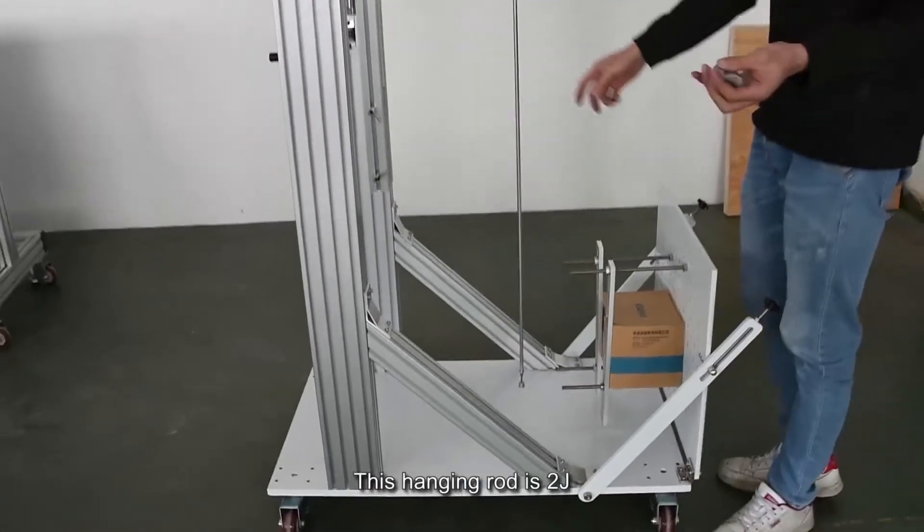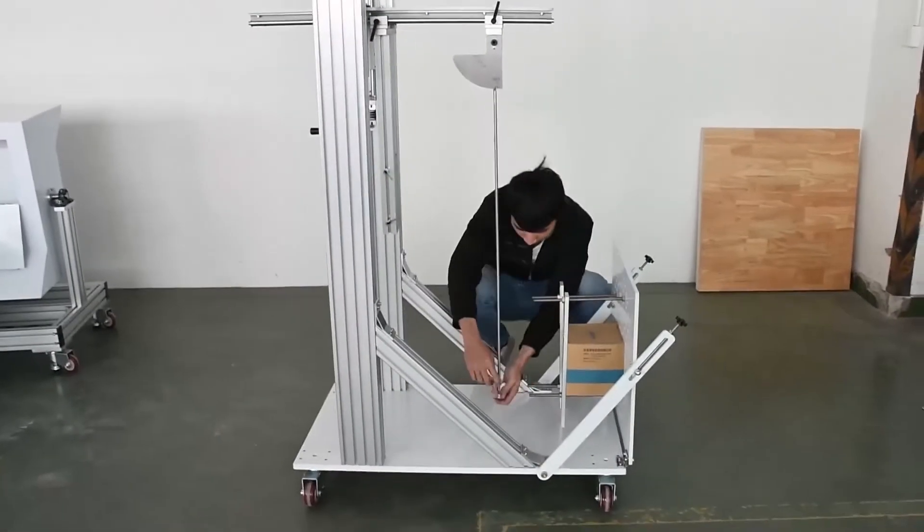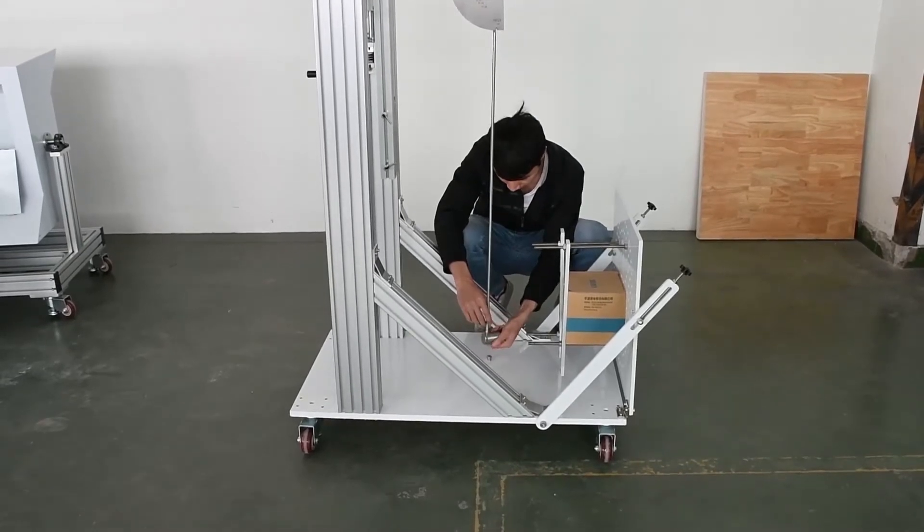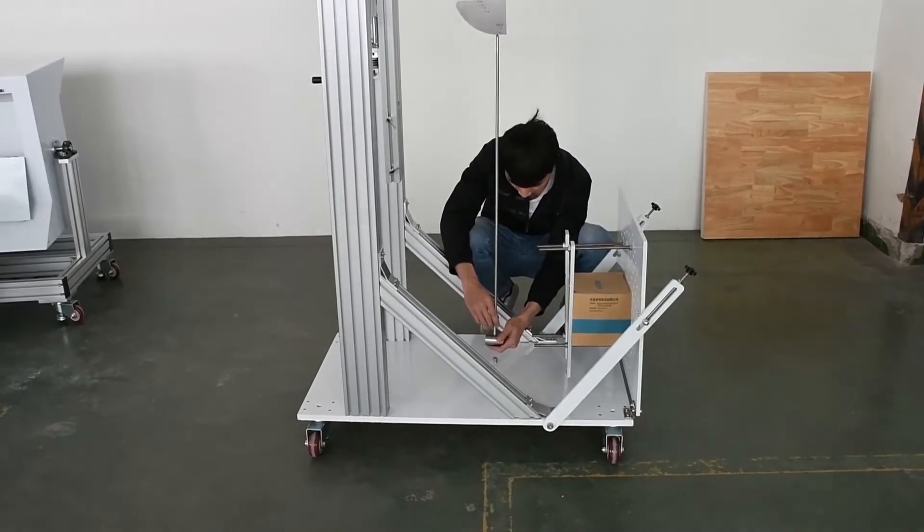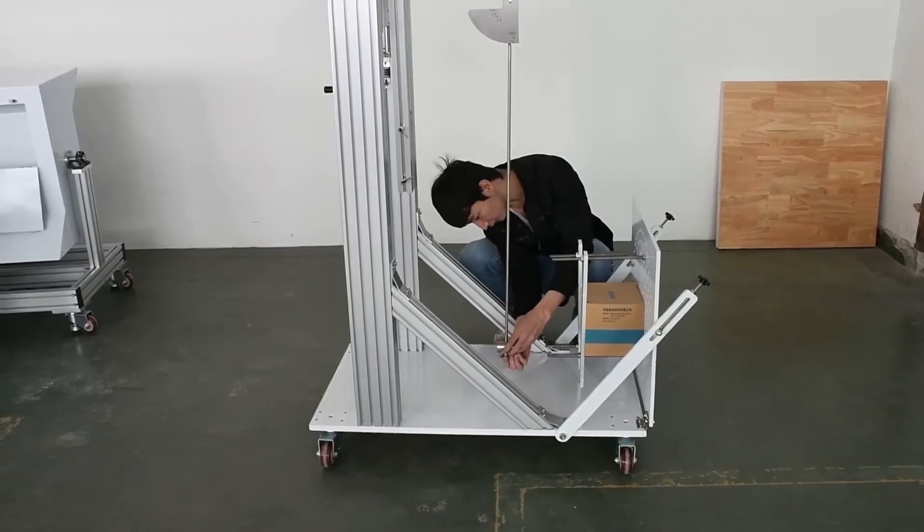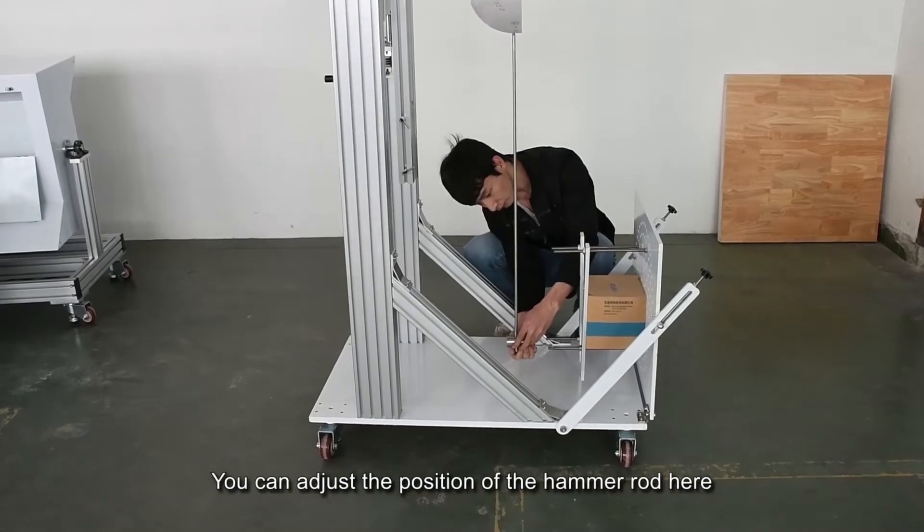This hanging rod is 2J. Install a 2J hammer here. You can adjust the position of the hammer rod here.